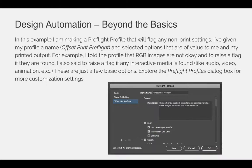In this example, I am making a preflight profile that will flag any non-print settings. I've given my profile a name — offset print preflight — and selected options that are of value to me and my printed output. For example, I told the profile that RGB images are not okay and to raise a flag if they are found. I also said to raise a flag if any interactive media is found, like audio, video, animation, etc. These are just a few options. Explore the preflight profiles dialog box for more customization settings.